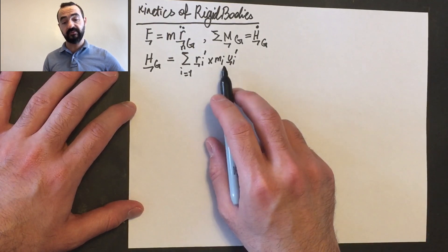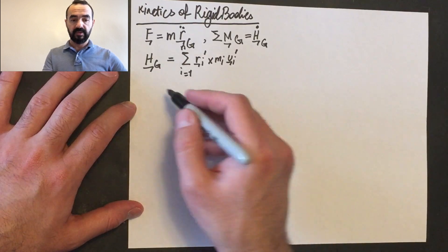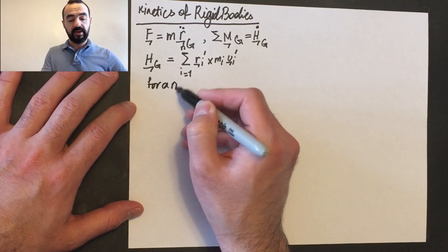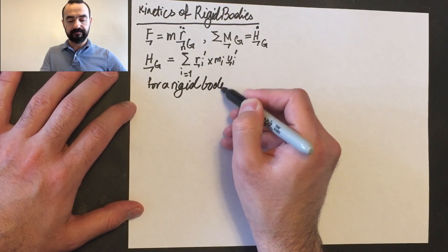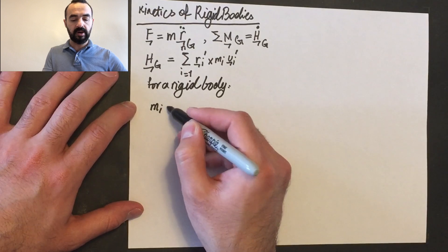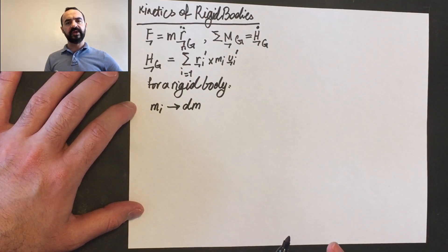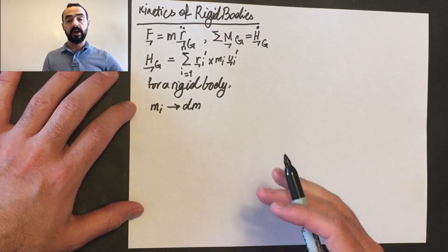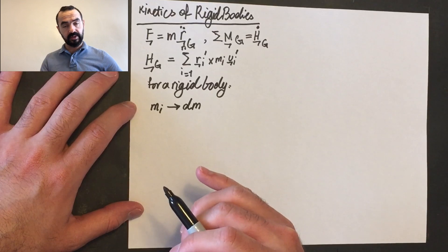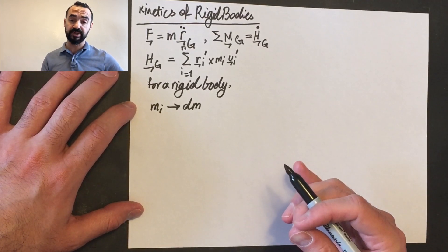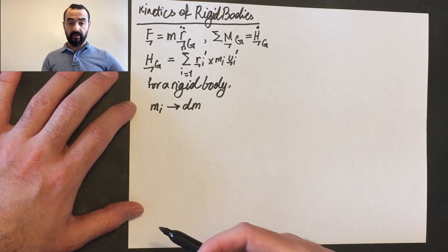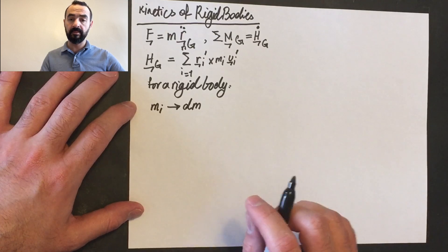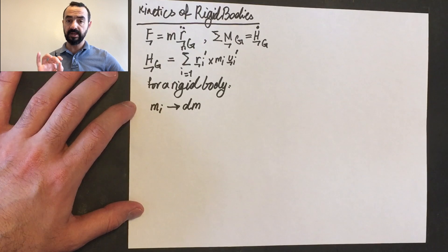Think about your rigid body as a system of particles — small particles. It is as if you replace m_i with dm. For a rigid body, m_i becomes dm. You can think of m_i as delta m_i, a small mass. Dividing the rigid body into an infinite number of small masses, from basic calculus you know that dm describes that small particle in the rigid body.